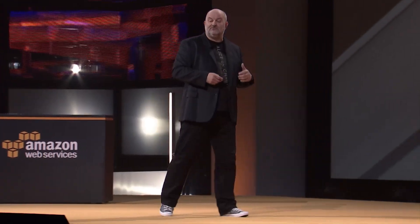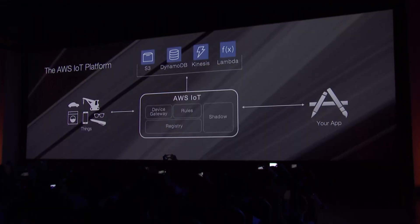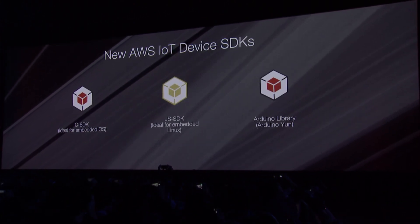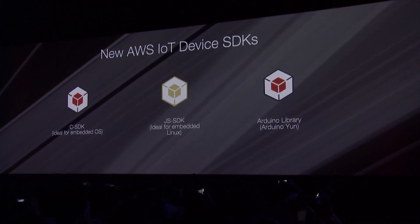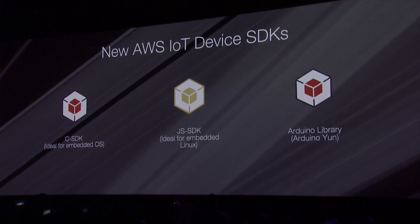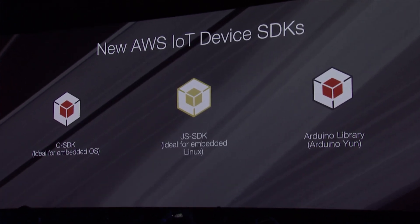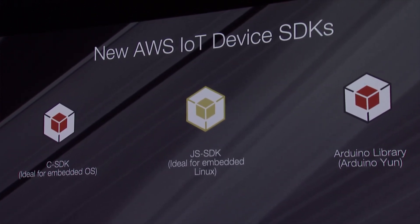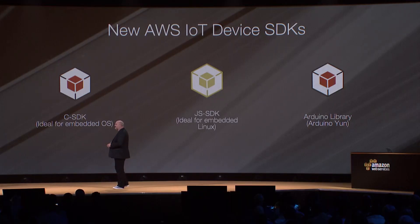Next to this, you write Lambda code to build the smarts of your application. With this IoT service comes a selection of device SDKs. There will be an SDK in C, because most device programming still happens in C. There's also a JavaScript SDK and an Arduino library that makes it easy to control your Arduino boards and use the functionality to talk back to the IoT service.